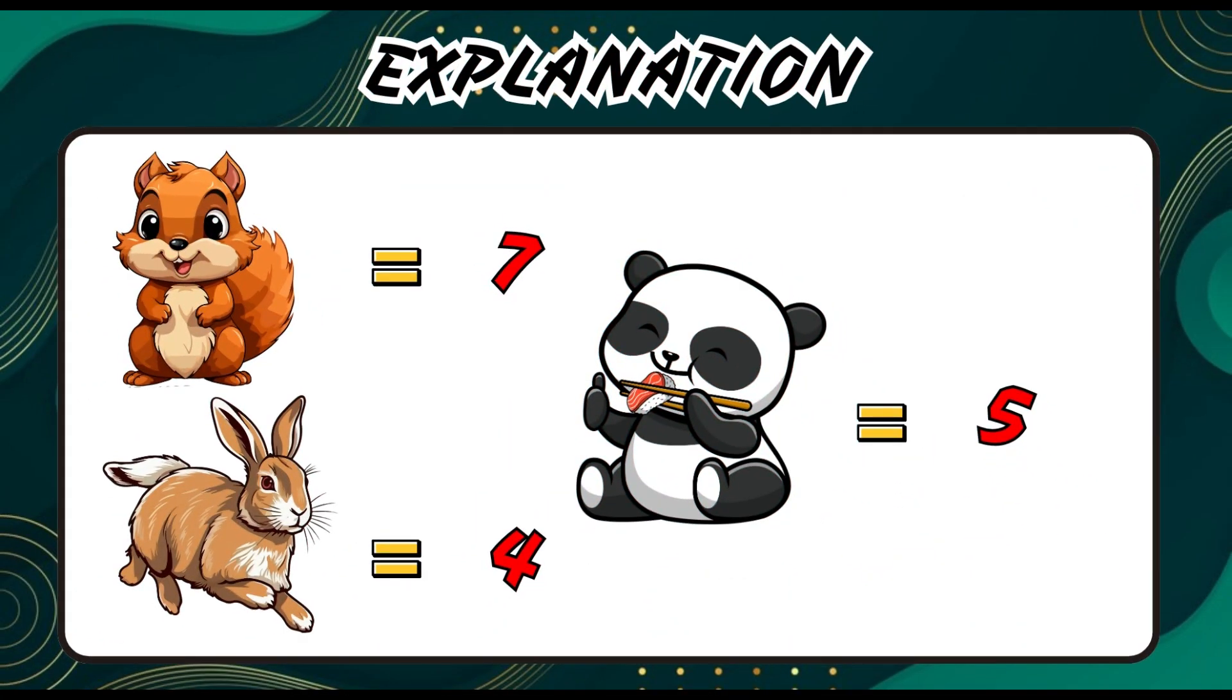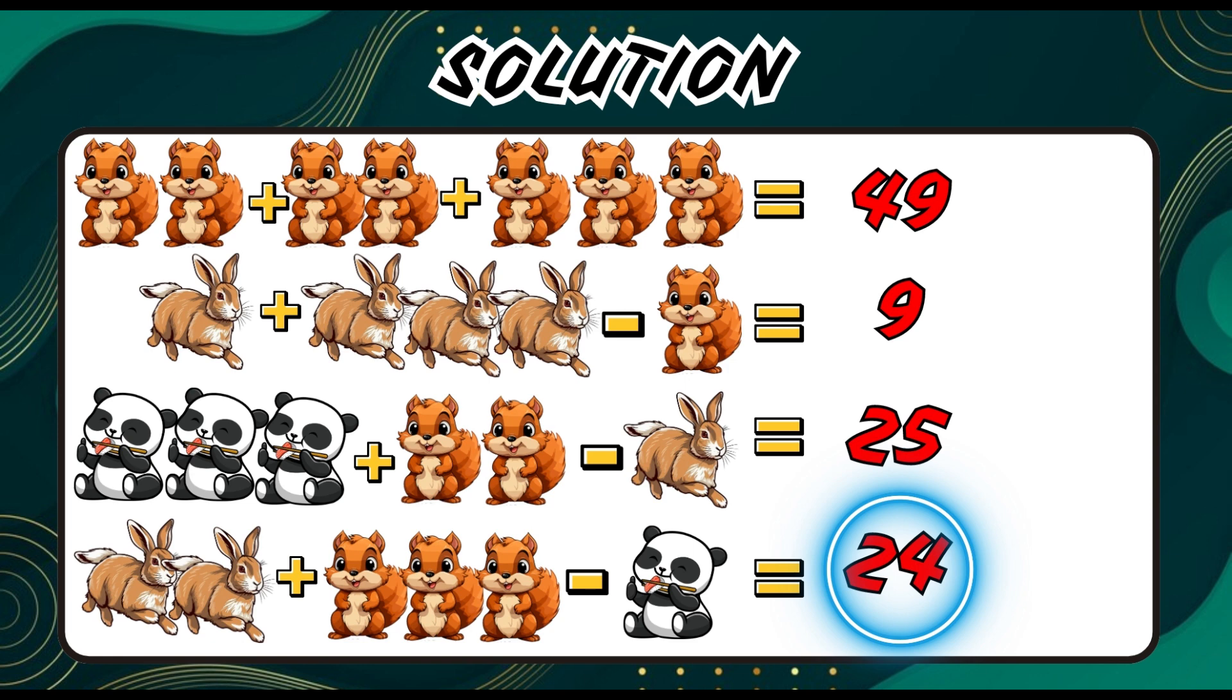Not an issue if you didn't get it. Let's check the equation together. The squirrel has a value of 7, 5 for the panda, and 4 for the rabbit. Now just apply the values in the equation and get the answer. We obtain the equation as 8 plus 21 minus 5, which equals 24.